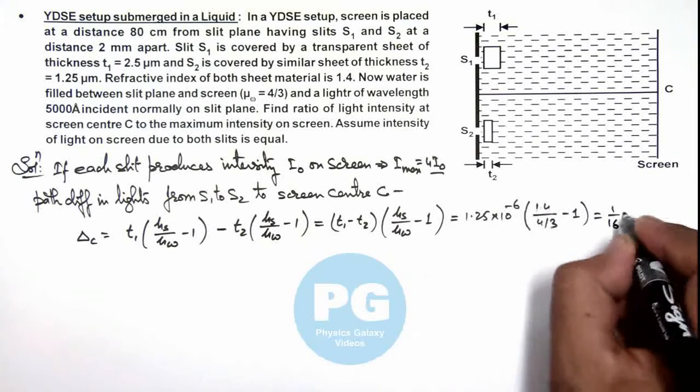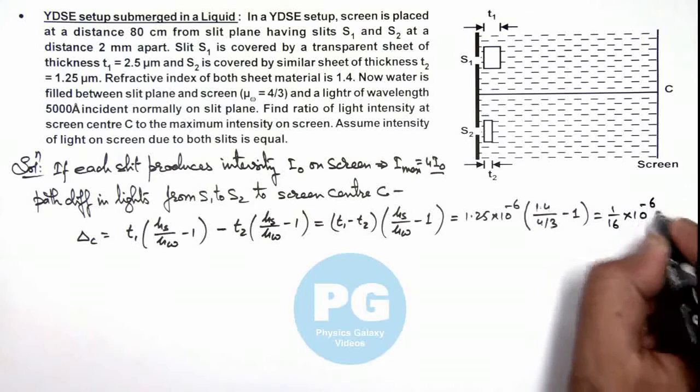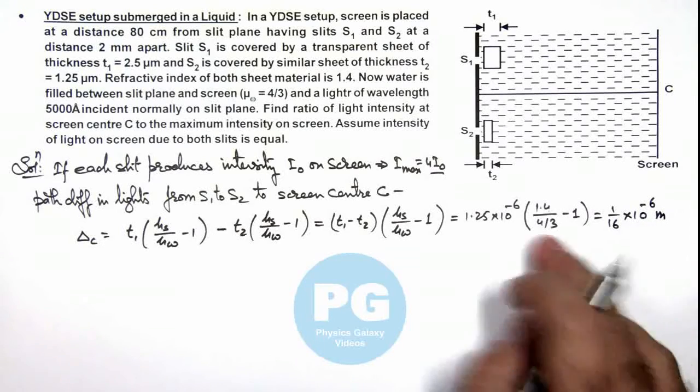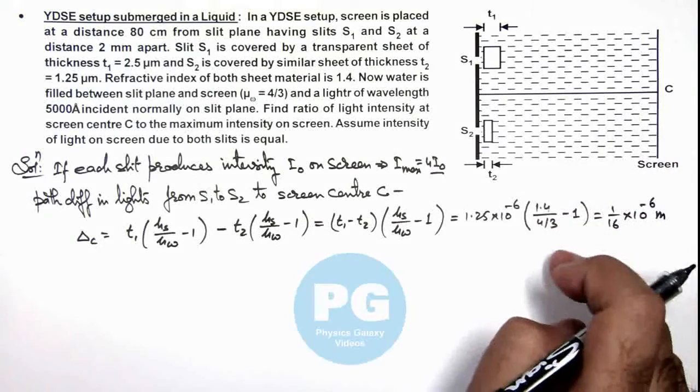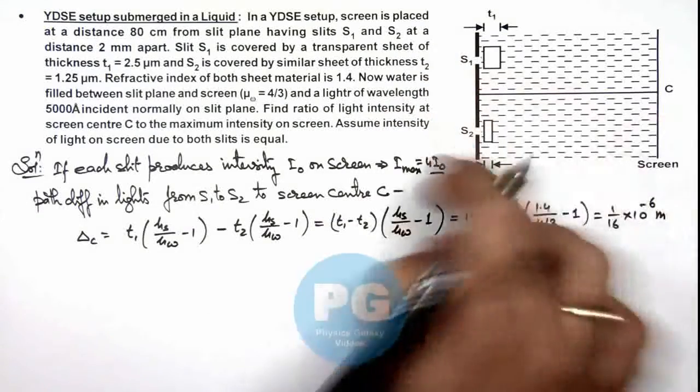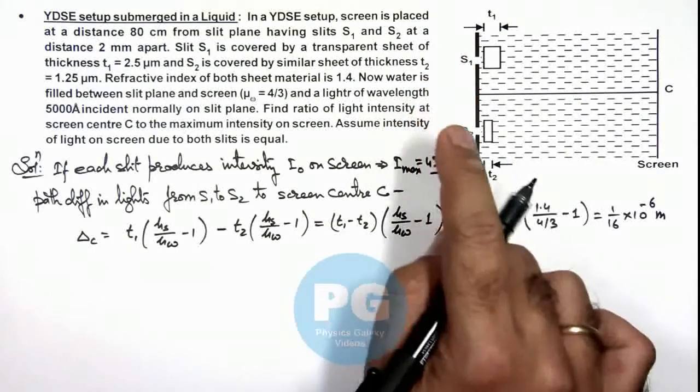When you calculate this value numerically, it comes out to be 1/16 × 10⁻⁶ meter, which is the path difference at screen center due to the light beams coming from slits S₁ and S₂.